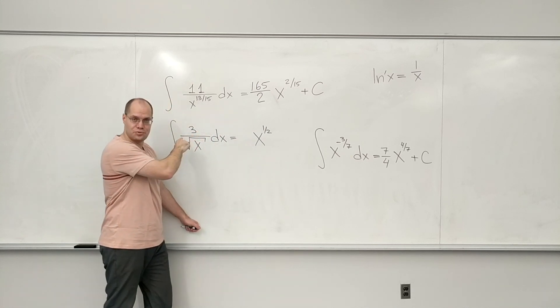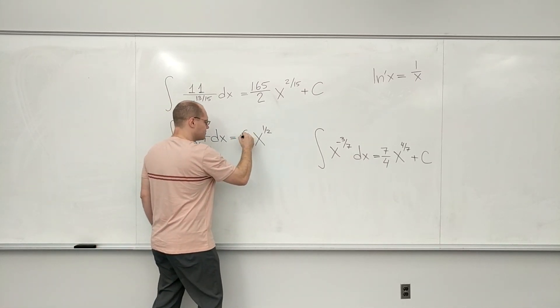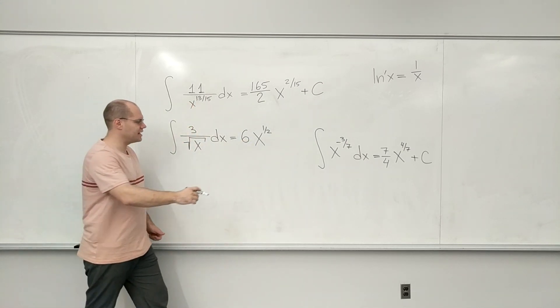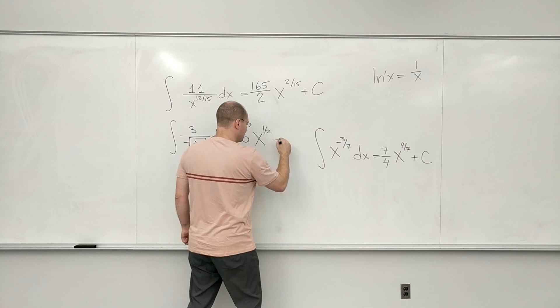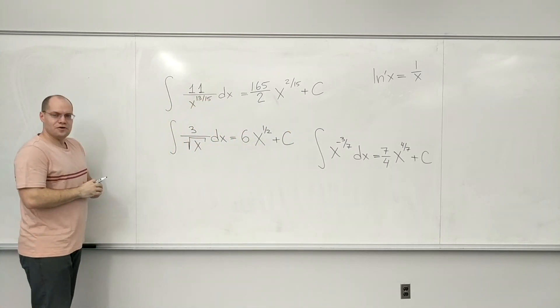And now I remember about the three. So it just becomes three times two, six, times square root of x plus C.